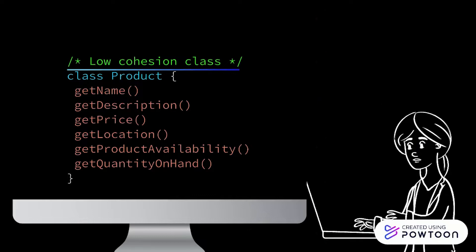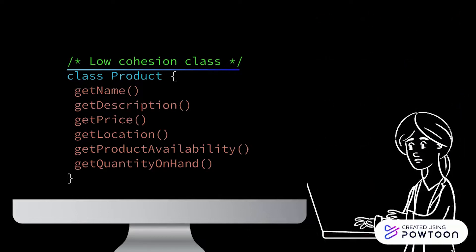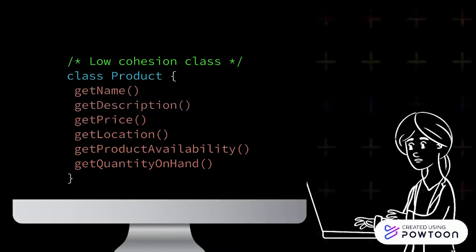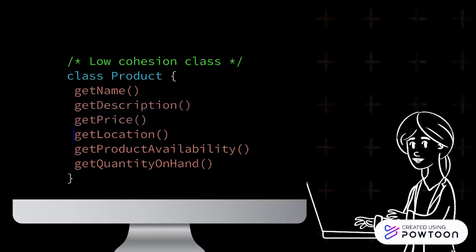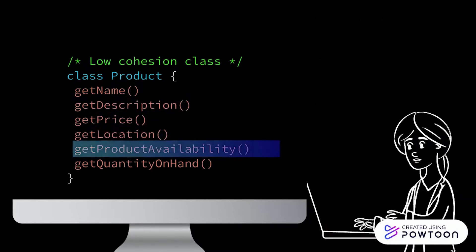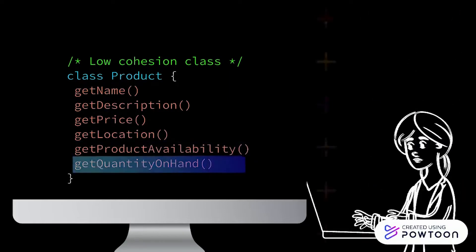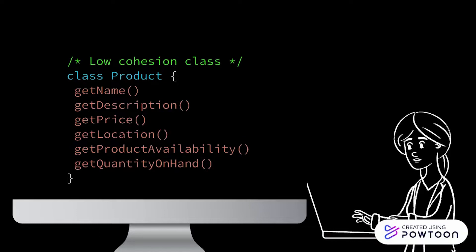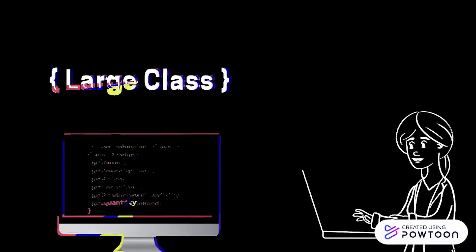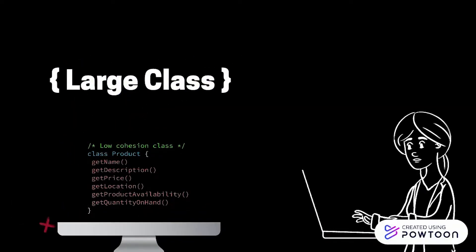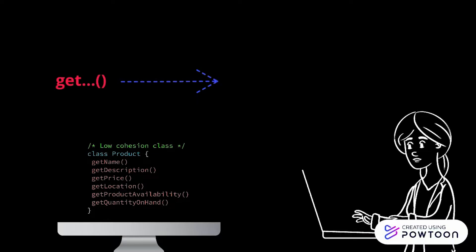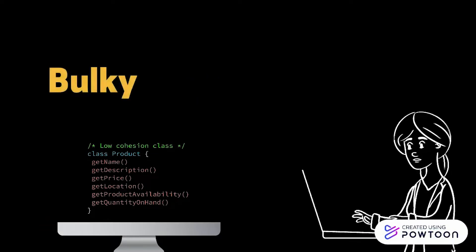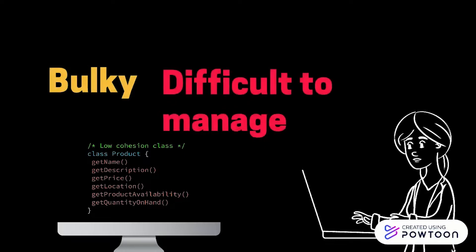The low cohesion class consists of six methods: getName, getDescription, getSupply, getLocation, getProductAvailability, and getQuantityOnHand. However, these methods are all under a single LiveProduct class.